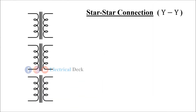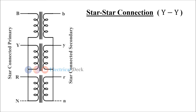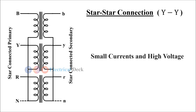In star-to-star type of connection, both primary and secondary windings are connected in star. The star-to-star connection of a three-phase transformer is used where there is a need for small currents and high voltage. In star connection, there is a phase shift of 30 degrees between phase and line voltages on both primary and secondary sides.